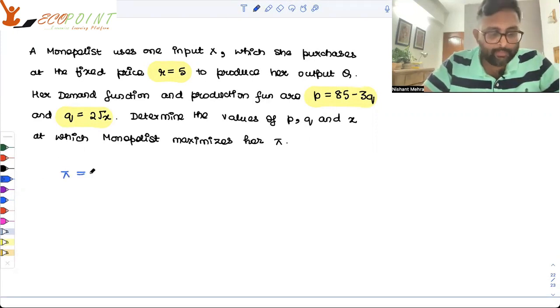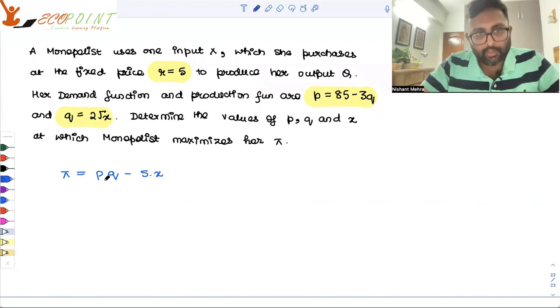What is pi equals to? p, q minus 5 into x. q is the output which she is producing. x is the input. 5 is the price of the input.